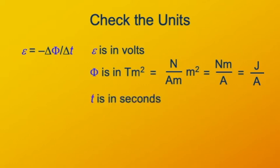Then the denominator of Faraday's law is time, which is in seconds. Therefore, the units of rate of change of magnetic flux are joules per ampere per second, or joules per ampere second. An ampere second is a coulomb, so now we just have joules per coulomb. A joule per coulomb is just a volt, and sure enough, the units work.